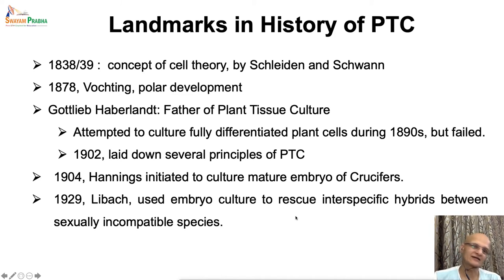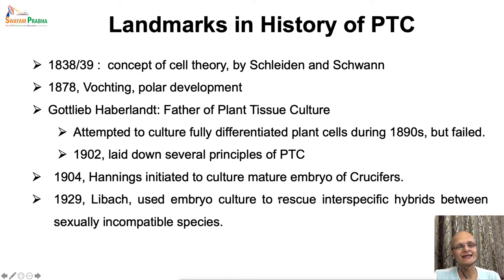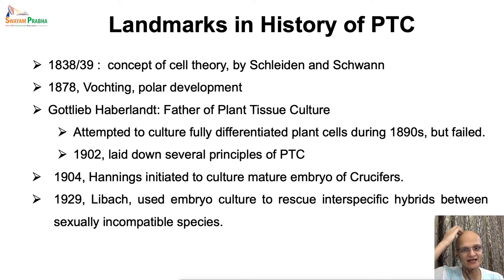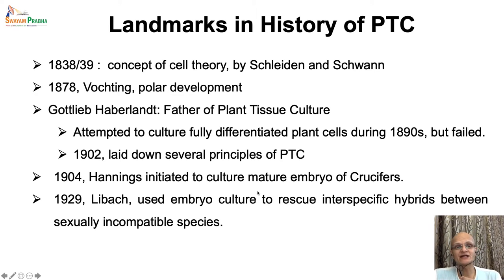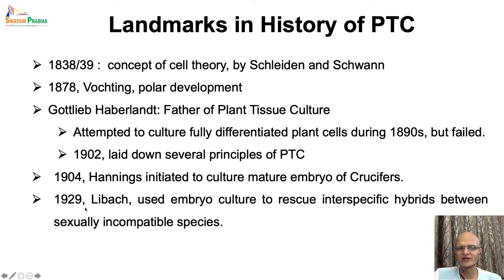Soon after, within a few years, Hanning and Brown successfully cultured the embryos of crucifers on artificial media — that is, artificial solutions of mineral salts and sugar — and actually grew them to maturity, generating full-fledged plants. This was also confirmation of what Haberlandt had said earlier in 1902.